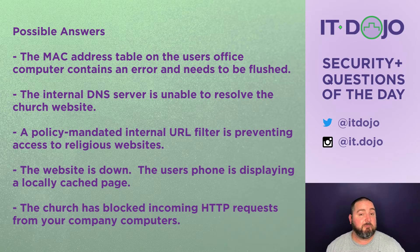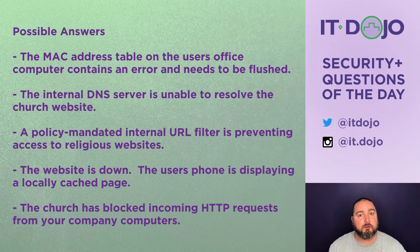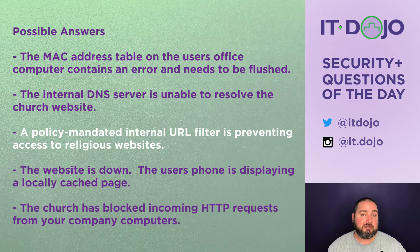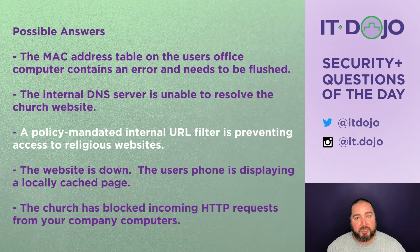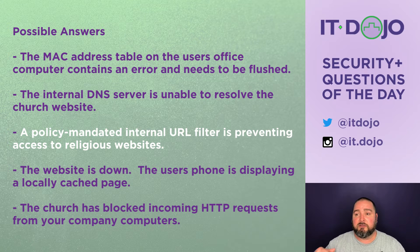The third option says that a policy-mandated URL filter is preventing the user from being able to access the website. That is almost certainly what's going on here. When you have a URL filter in place, it identifies the site by its contents — saying it's an adult site, a gambling site, a sports site, or a social networking site — and then prevents access, redirecting them to a predefined page. Normally that page would say something more descriptive than just 'webpage blocked,' offering information about why it was blocked, but that's almost certainly what's going on here.